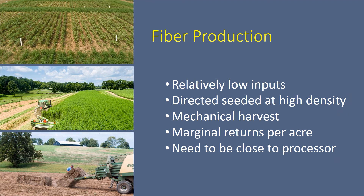Fiber production does require relatively low inputs in terms of fertilizer. We can directly seed it through grain seeders that are already available to farmers. We use high seeding rates to get good stands and to compete with weeds. We can mechanically harvest it with sickle bar type mowers or disc bind type mowers — we do not like to crimp it. We're going to bale it, as you can see in the lower left hand corner. Right now our primary concerns are returns per acre. When we do fiber we're talking about a bulk product where we're getting three, four, five tons of material per acre, and we'll need to ship that to a processor, so being close to that processor to reduce transportation costs is something we need to keep in mind.